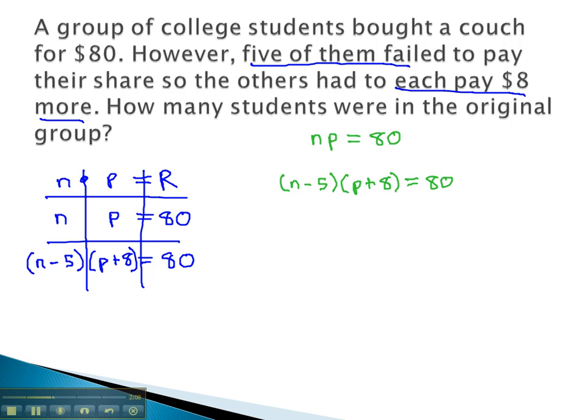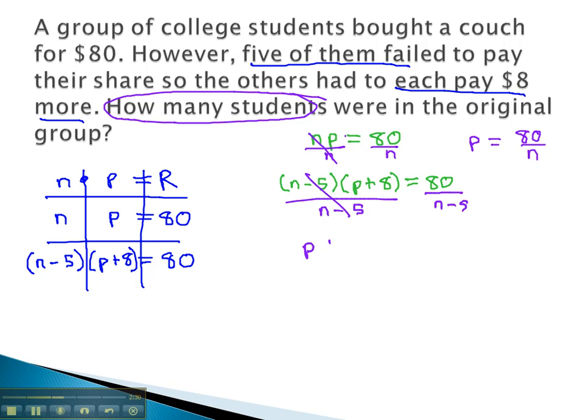In order to start solving these equations, we will divide by the factor we're looking for. The question's asking how many students. We're looking for the number. So we'll divide both equations by n, giving us p equals 80 over n, and divide the other equation by the n factor, or n minus 5, to get p plus 8 equals 80 over n minus 5.